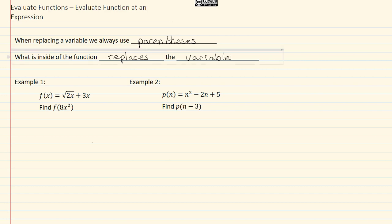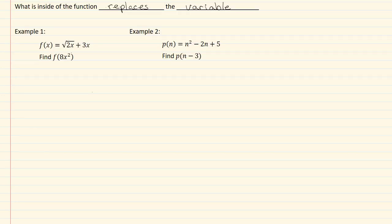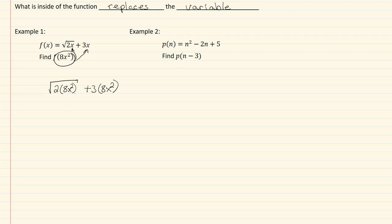So let's take a look at example one. Here we're going to take our 8x² and plug it in to our x. So that means we're going to get the square root of two times 8x² plus three times 8x². Watch how long you draw your bar for your radical — you want to make sure that it only goes with the stuff that's supposed to be inside of the radical and that you're actually covering that.